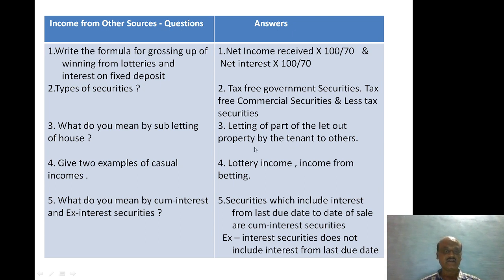Give two examples of casual incomes. The examples are: lottery income and income from betting. These are the two examples of casual income. Next question: what do you mean by cum-interest and ex-interest securities?